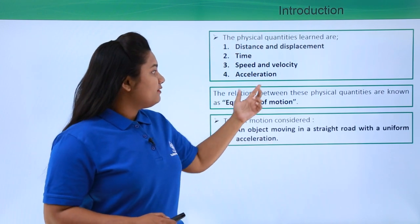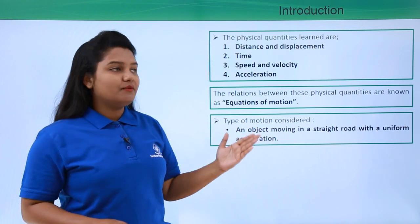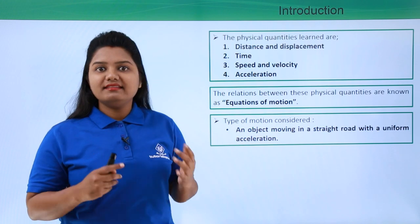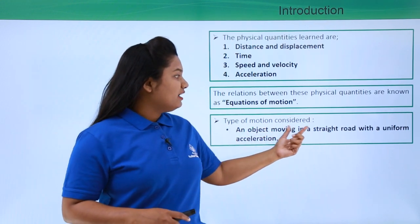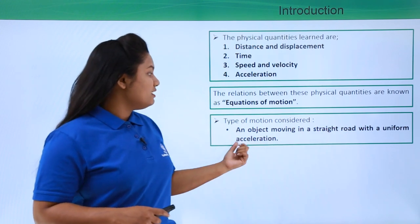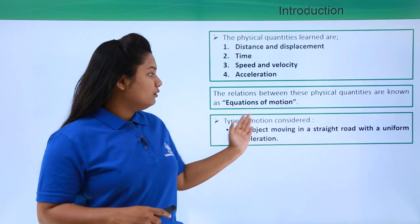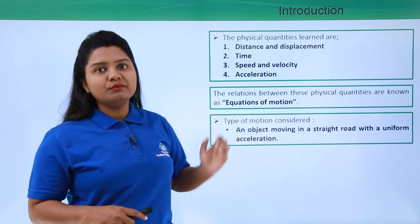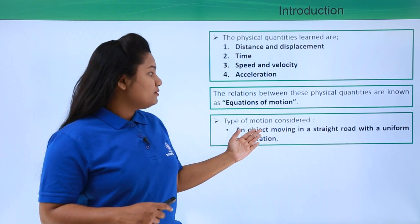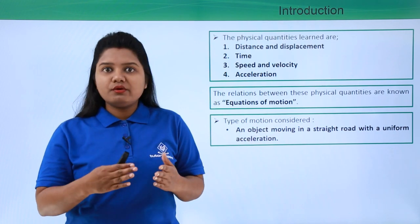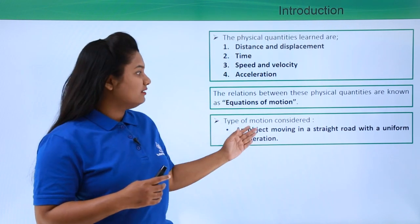We will be considering only one kind of motion whenever we are talking about equations of motion in this particular module. That is an object moving in a straight road with a uniform acceleration. So we will be considering only this kind of motion throughout this module — the object moving in a straight road only with a uniform acceleration and nothing other than this.